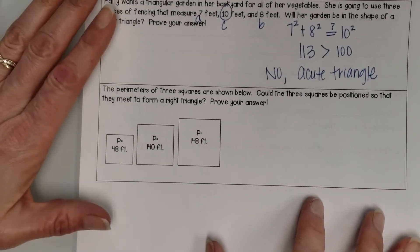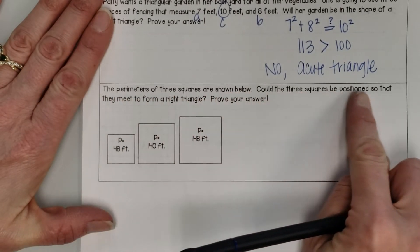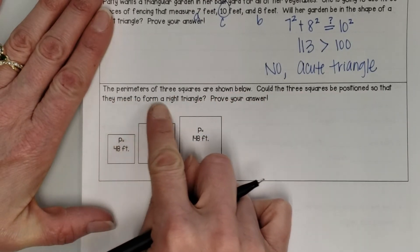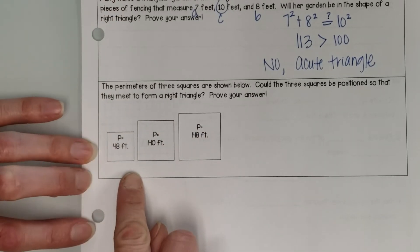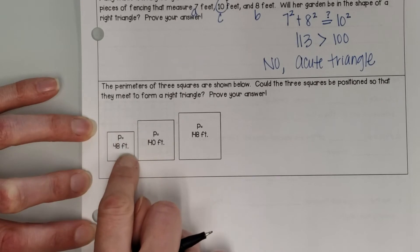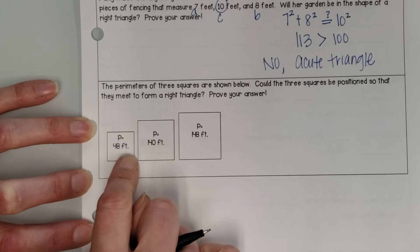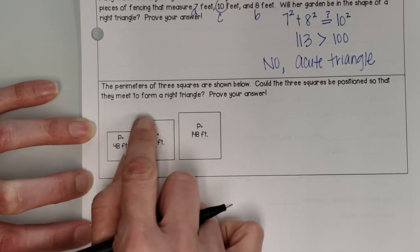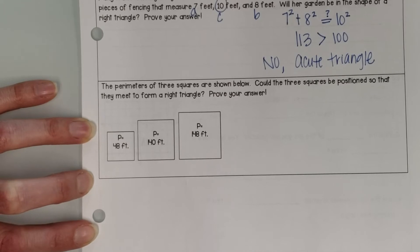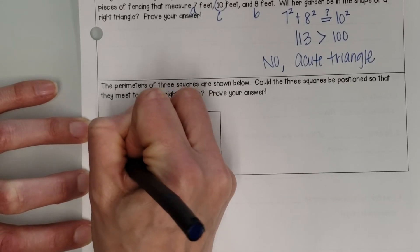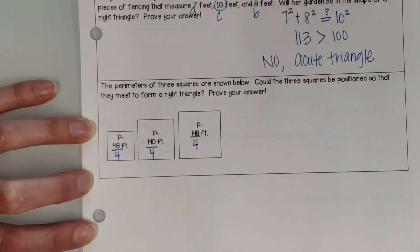All right, this one right here is a little tricky. The perimeters of 3 squares are shown below. Could the 3 squares be positioned so that they meet to form a right triangle? Prove your answer. So perimeter, remember, measures the outside area of a square, and if it's a square, all four sides are equal. So in order to find the side length of these squares, which I need to do in order to see if they can be made into a triangle, I have to divide them all by 4.